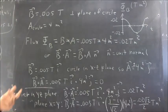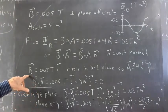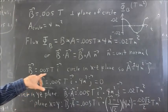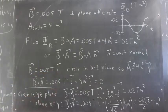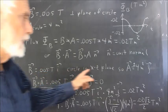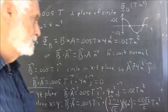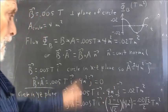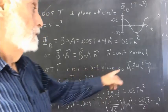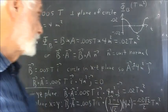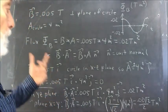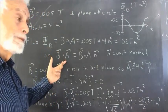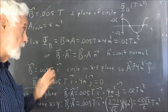Let's say we have a magnetic field of 0.005 Tesla times the I-vector, and we have a circle in the XZ plane — same circle, area four square meters. What's the vector area?